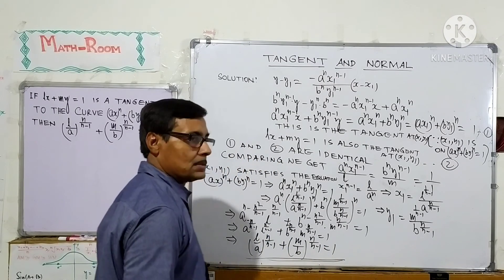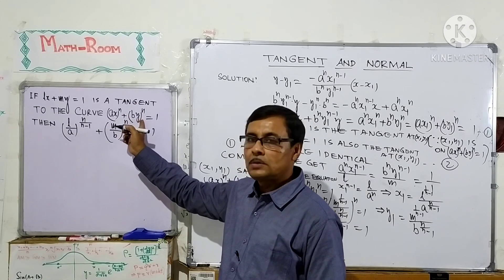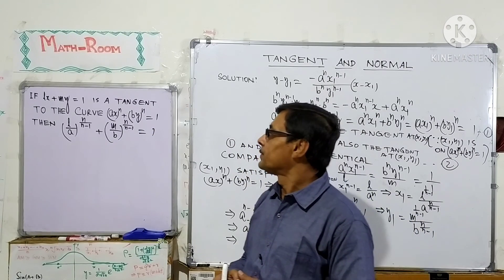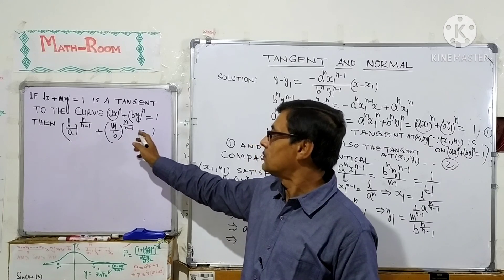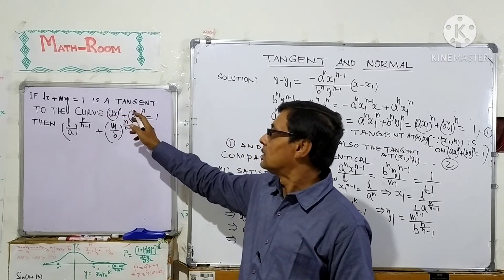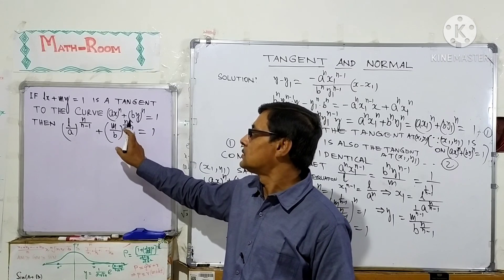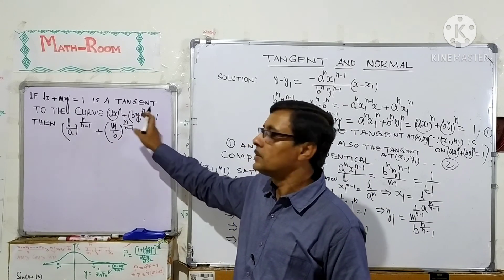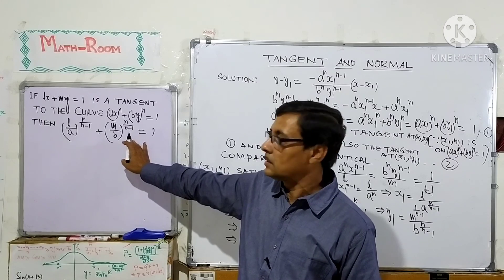Thus, this relation is established for this problem. Whenever Lx plus my equals 1 is a tangent to the curve Ax to the power n plus By to the power n equals 1, then the relation L over A to the power n over n minus 1 plus m over B to the power n over n minus 1 equals 1 is satisfied. This is the condition for the straight line to be a tangent to the curve, and thus the required relation is derived.